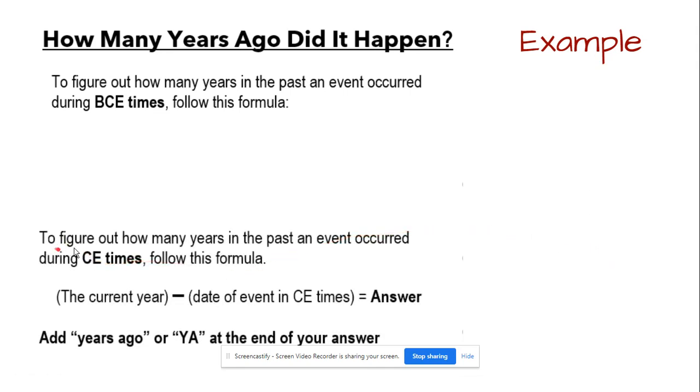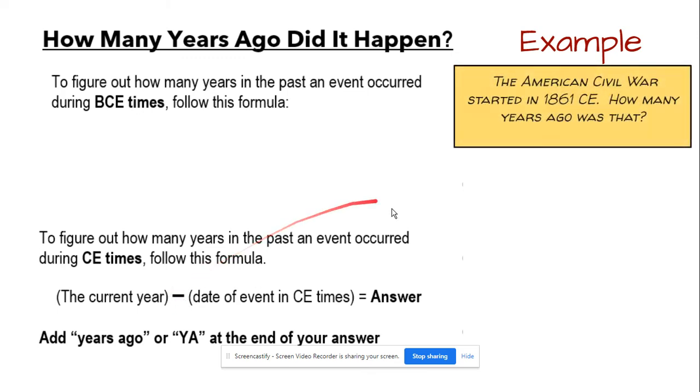If we're trying to figure out how many years in the past an event occurred during the CE era or CE times, you have to follow a different formula. The big difference with this formula is that you can't add the numbers, you need to subtract the numbers. You're going to start with our current year. The American Civil War started in 1861 CE. I see that CE, which tells me I should be subtracting. I'll start with our current year, which is 2021, and subtract 1861. From there, I get my answer of 161 years ago. The American Civil War happened 161 years ago.